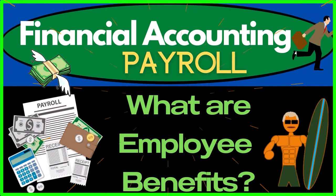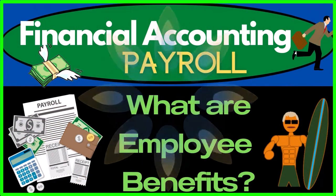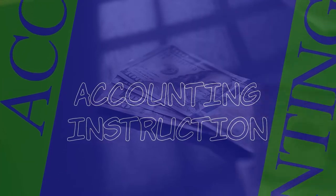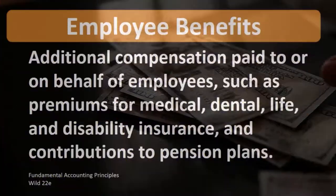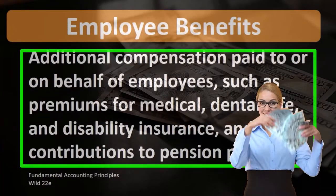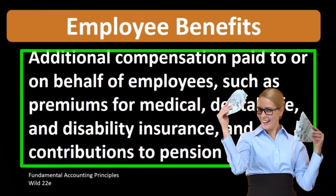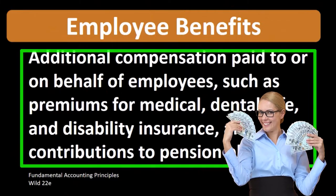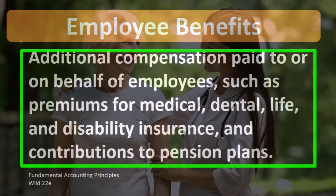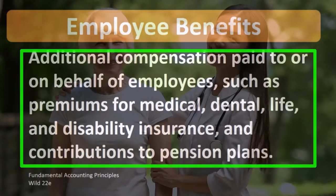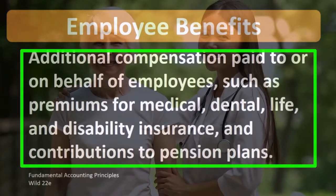In this lecture we will define employee benefits. According to Fundamental Accounting Principles Wild 22nd edition, the definition of employee benefits is additional compensation paid to or on behalf of employees, such as premiums for medical, dental, life, and disability insurance and contributions to pension plans.